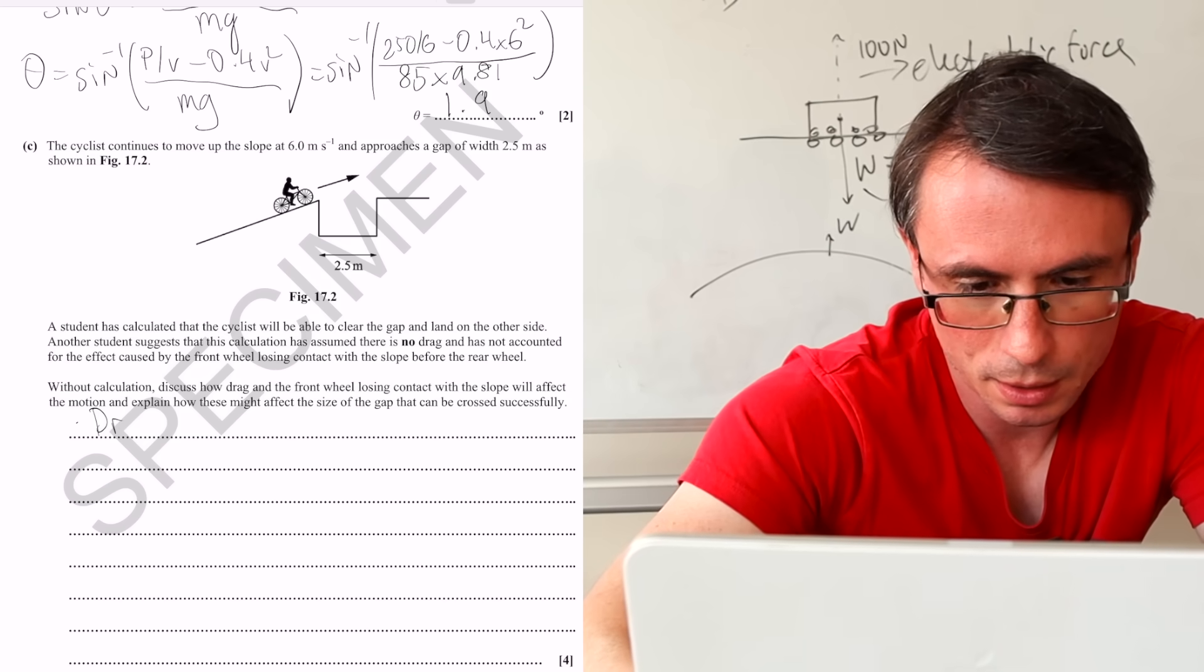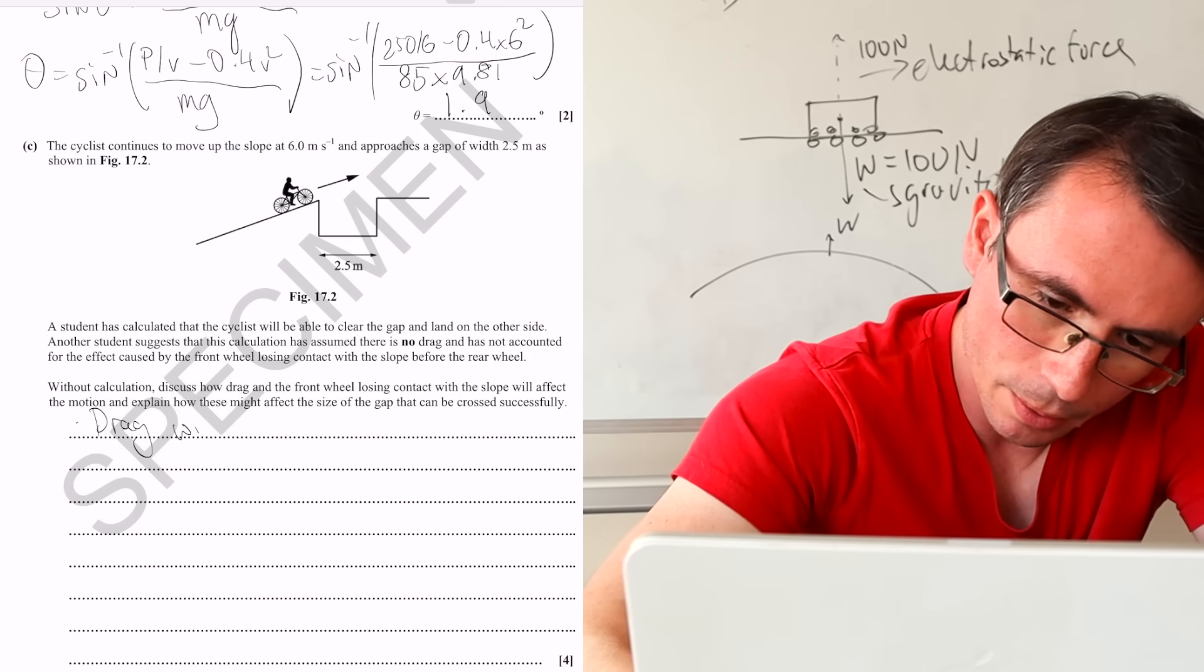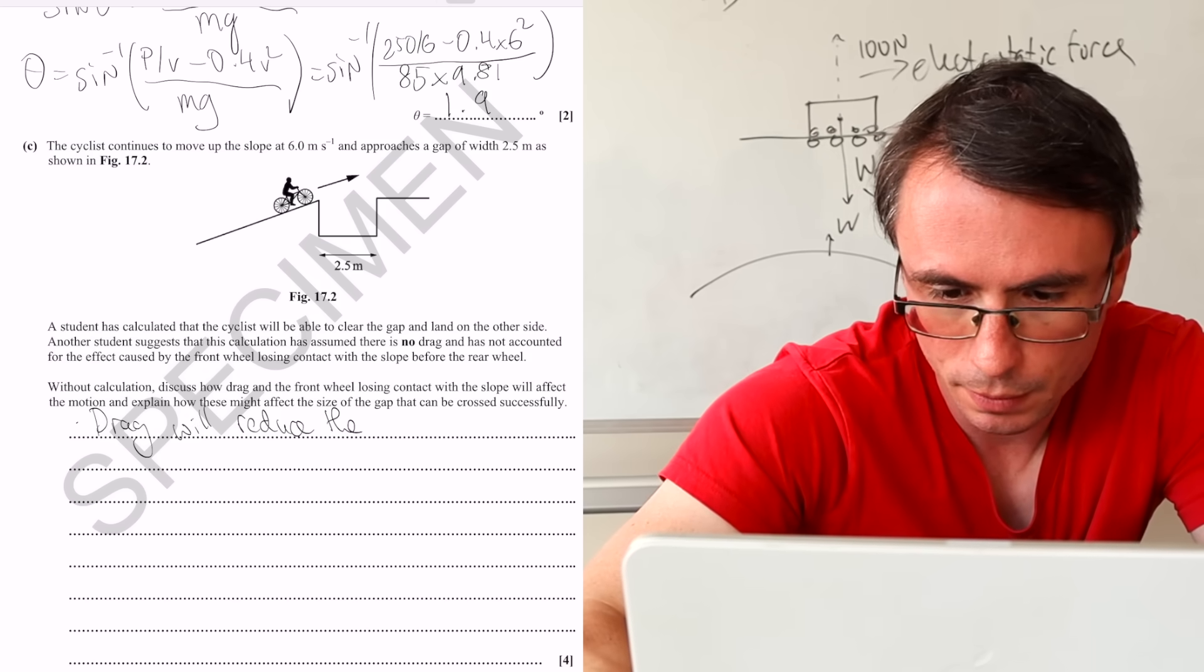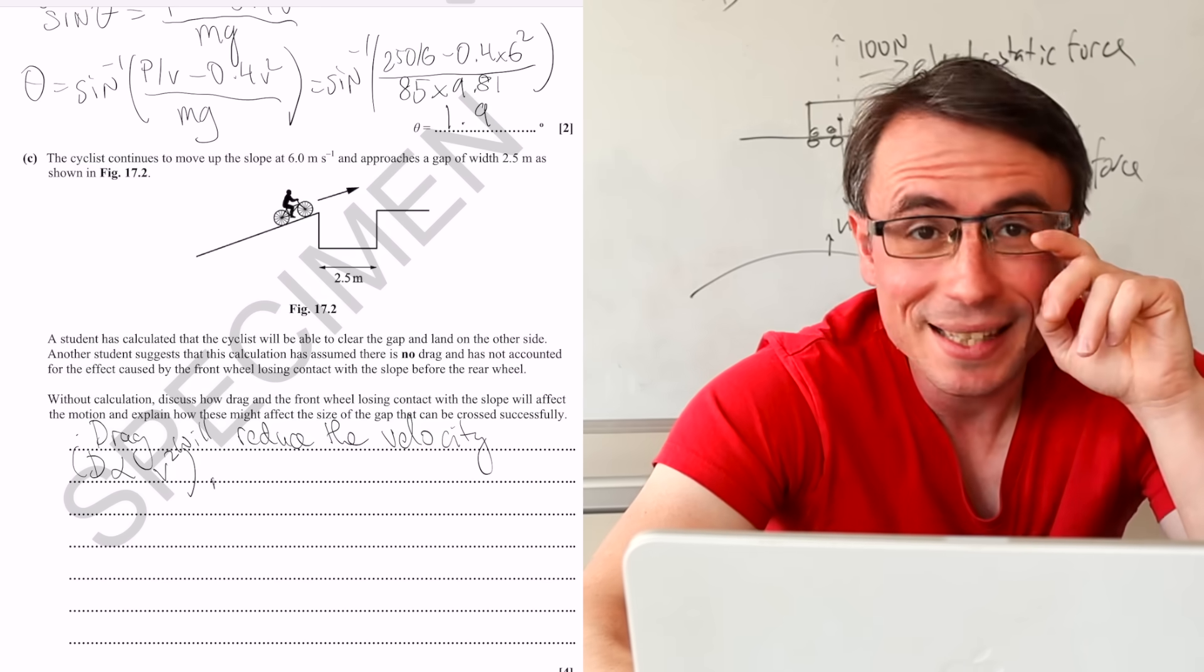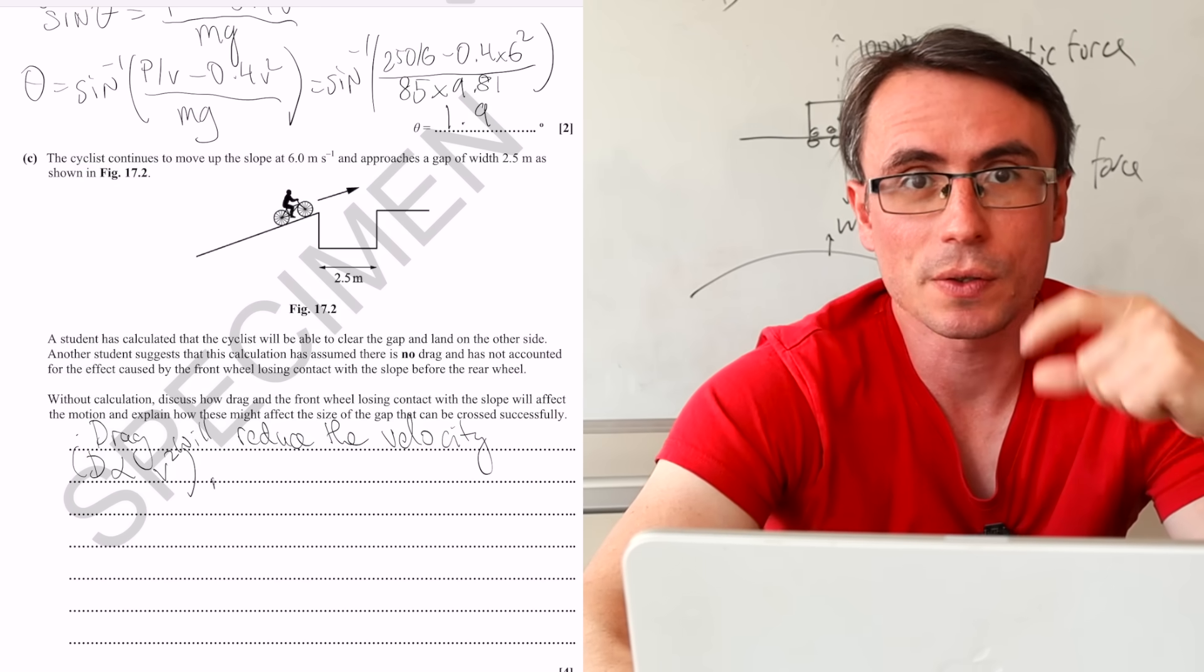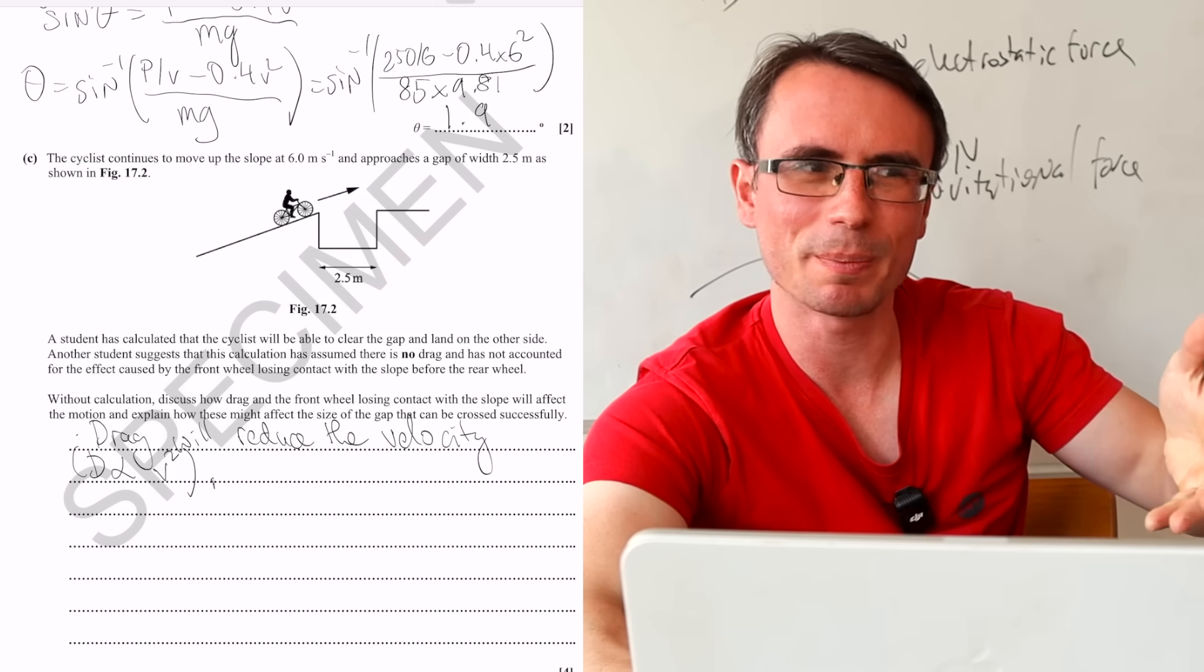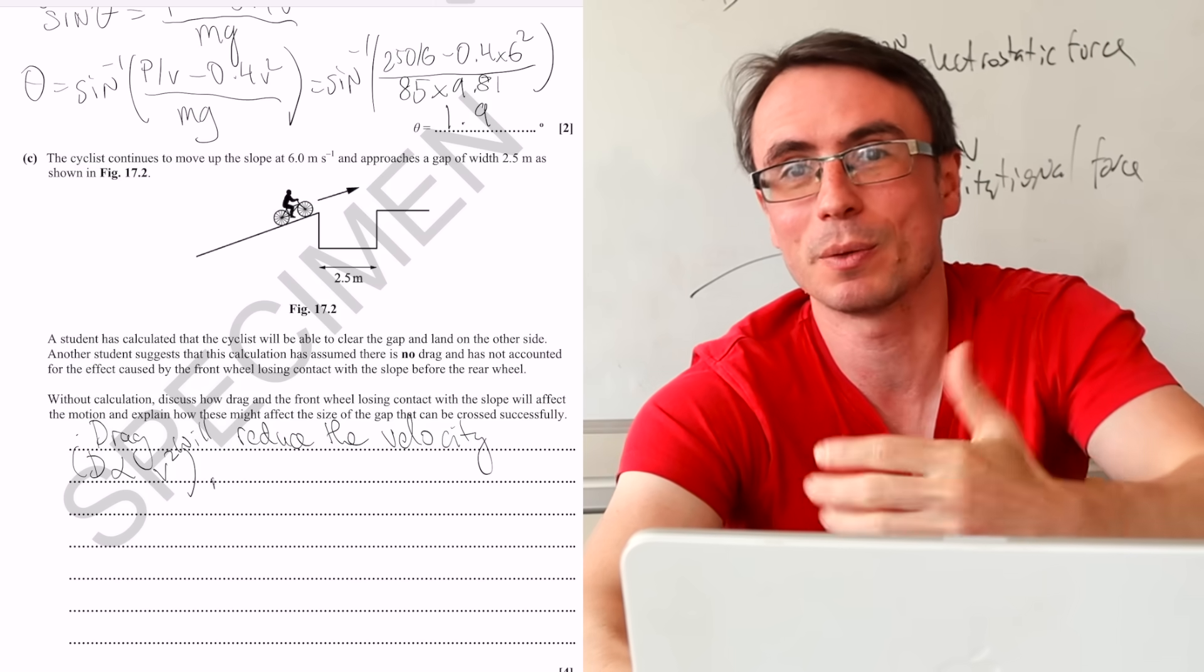So I will say that drag will reduce the velocity. This means that if the velocity is reduced, well, in general, the range, because the bicycle acts as a projectile, will be reduced.